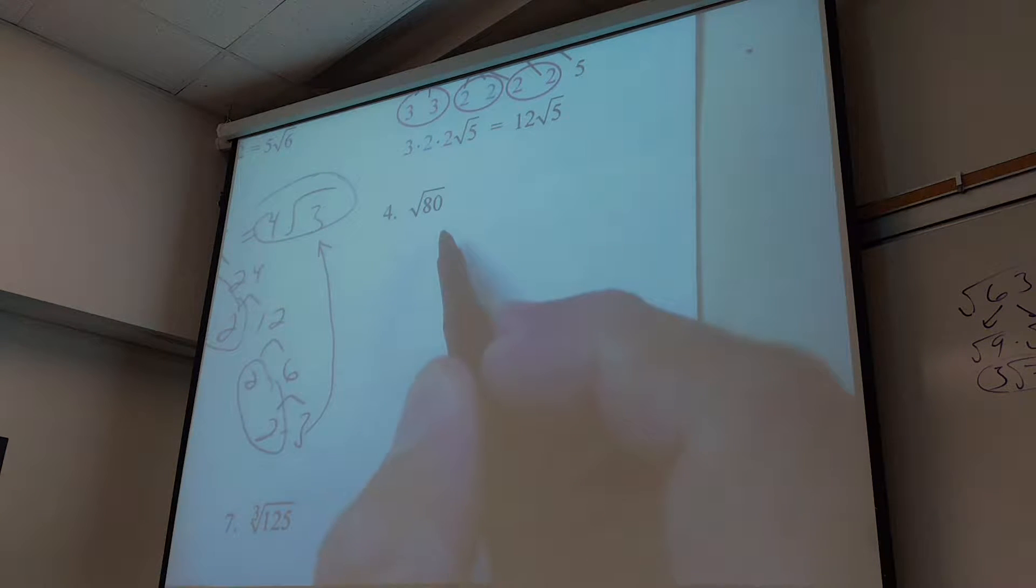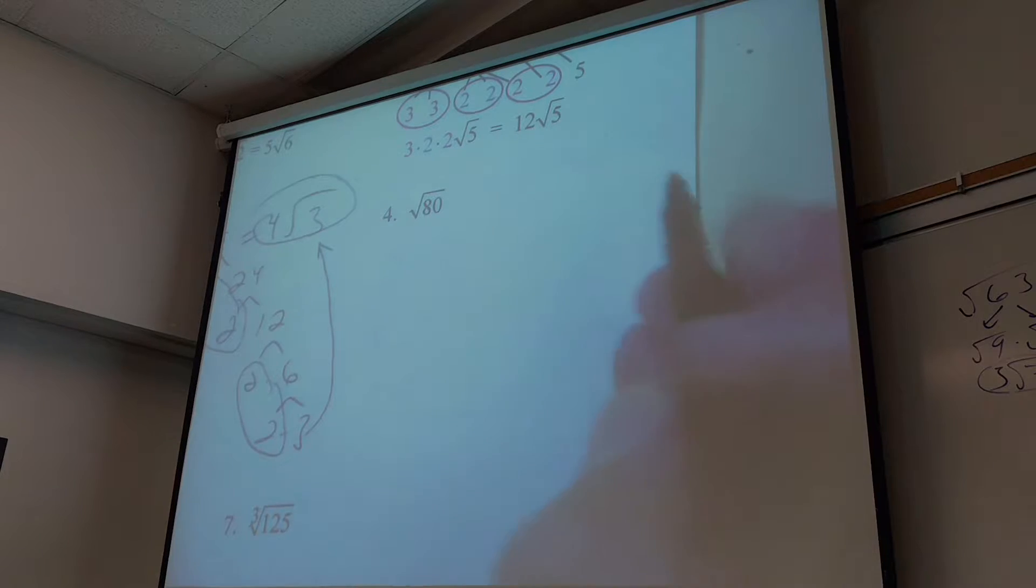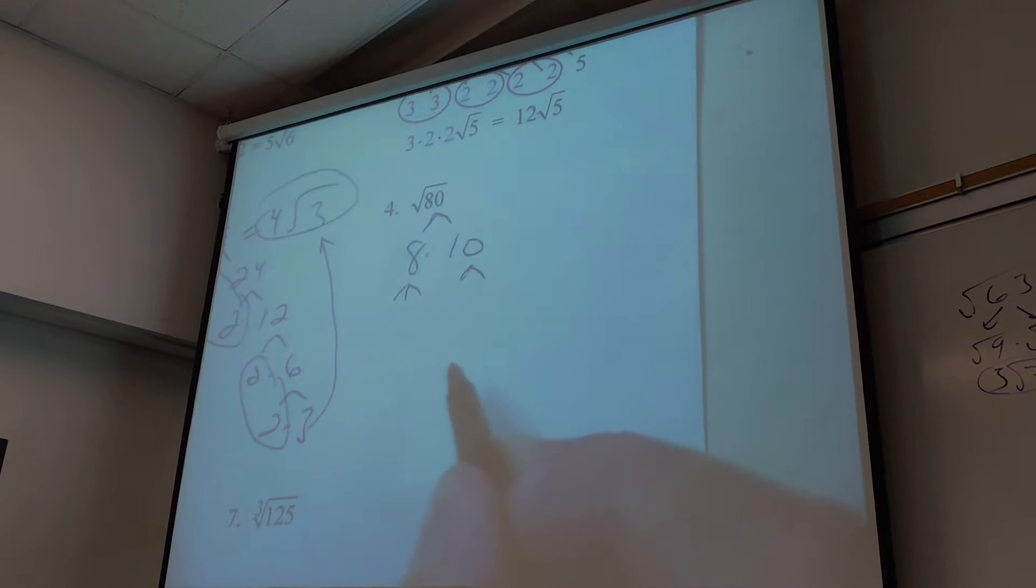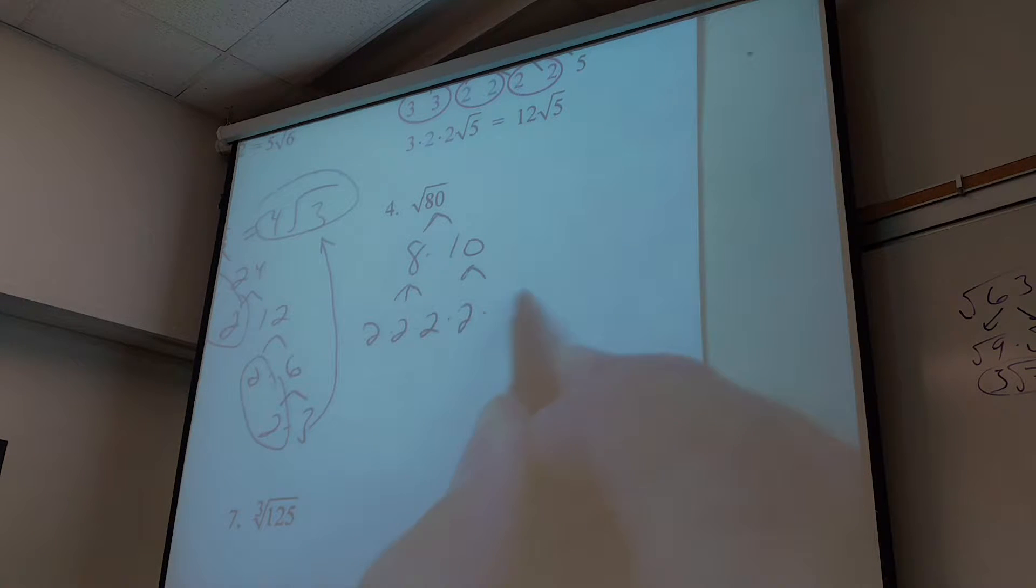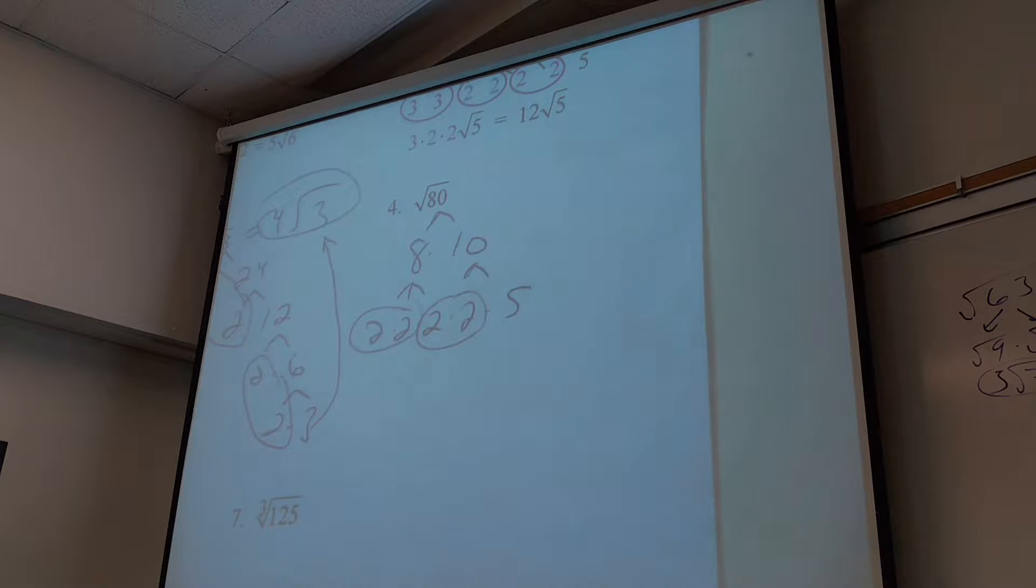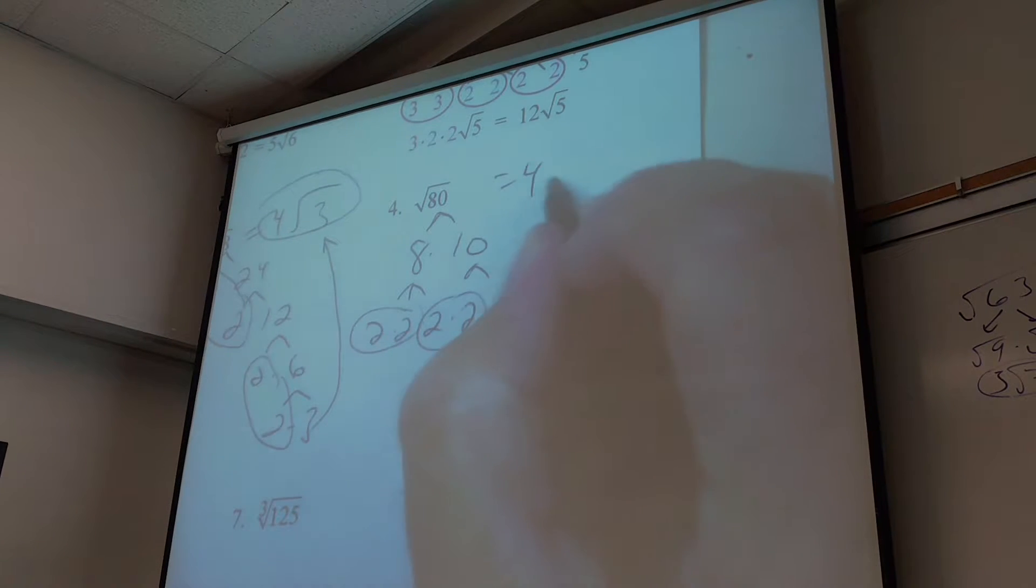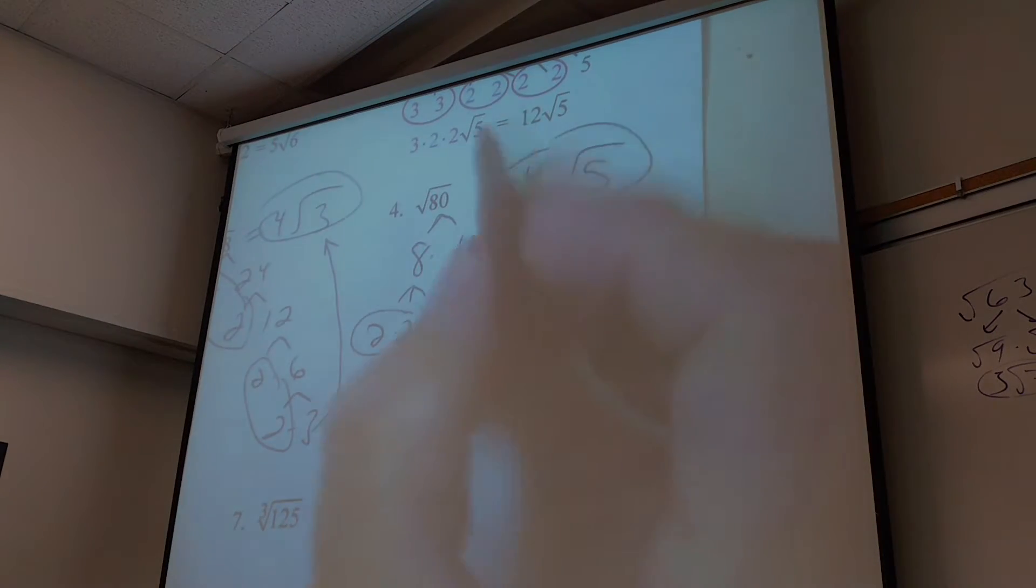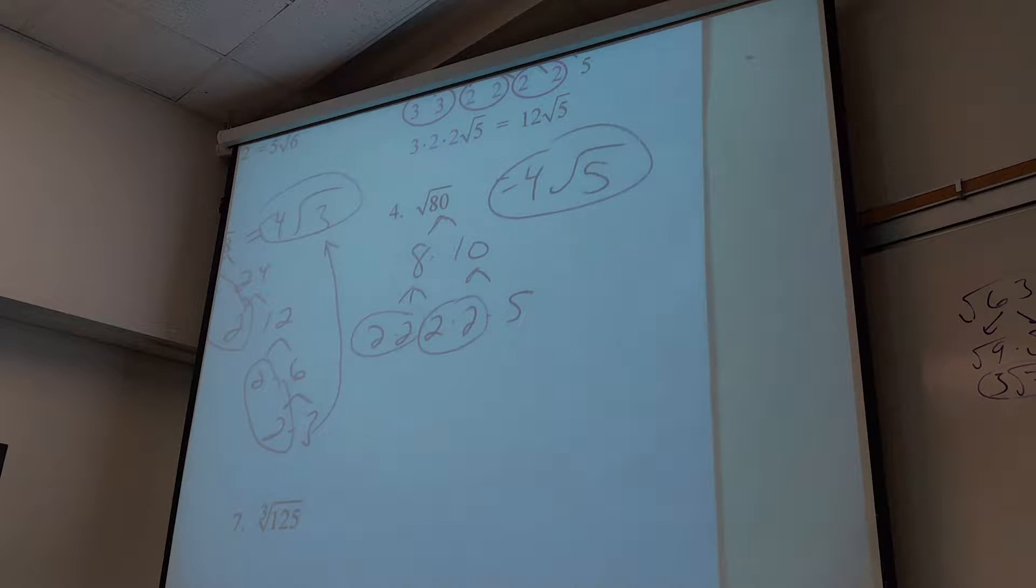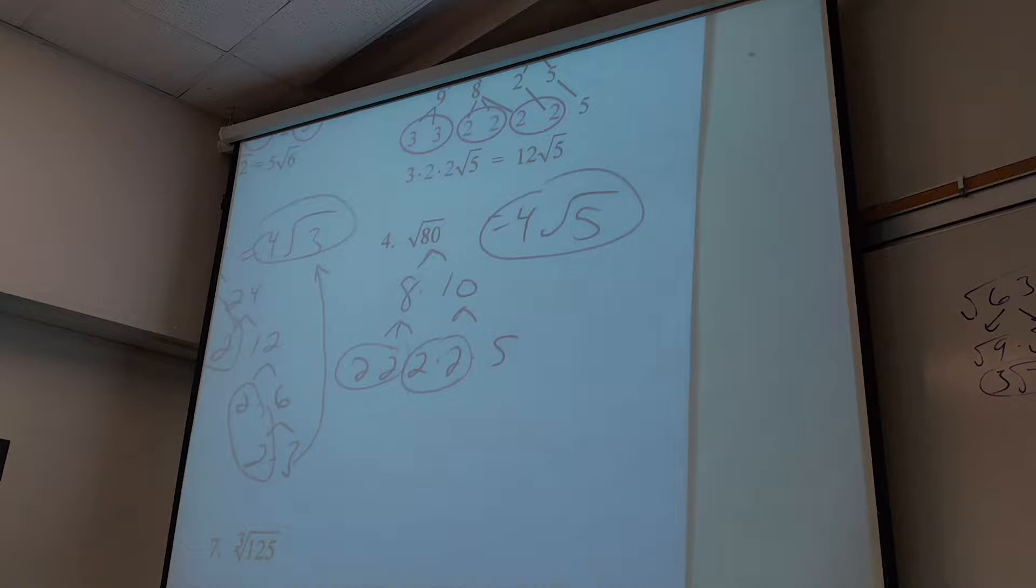What about number four? What method do you guys use for that one? We can do eight times ten. Eight is two times two times two, and ten is two times five. So I see two twos and another two twos. So for each one of those I can pull out a two. So out comes a four. And what's left inside? Five. And to check it, sixteen times five is eighty. Because it's four, so it's square root of sixteen again. So I can kind of check my work at the end.